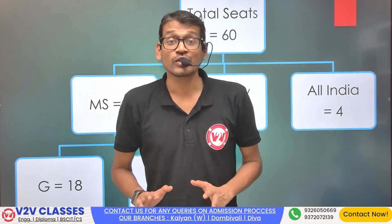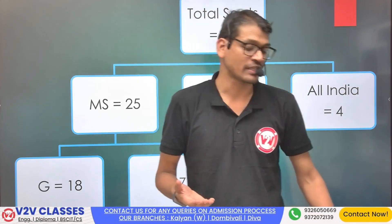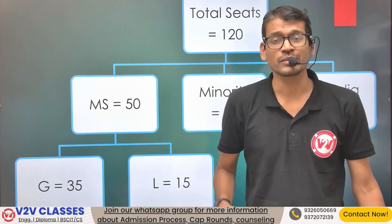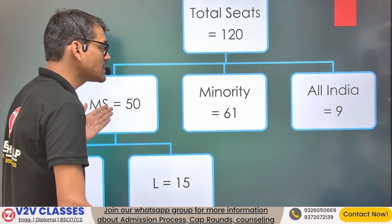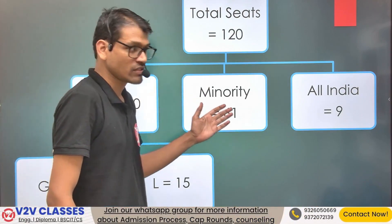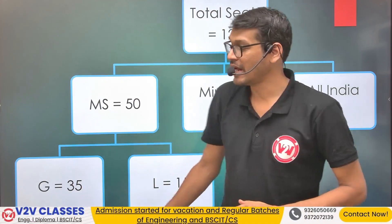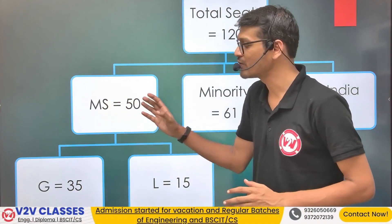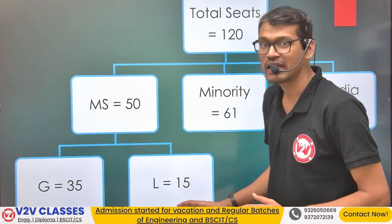This is the distribution of 60 seats. Similarly, for 120 seats, the distribution is as follows: Maharashtra State Level CET — 50 seats; Minority — 61 seats; All Over India — 9 seats available. The Maharashtra State Level seats are further distributed: general category has 35, and ladies have 15.